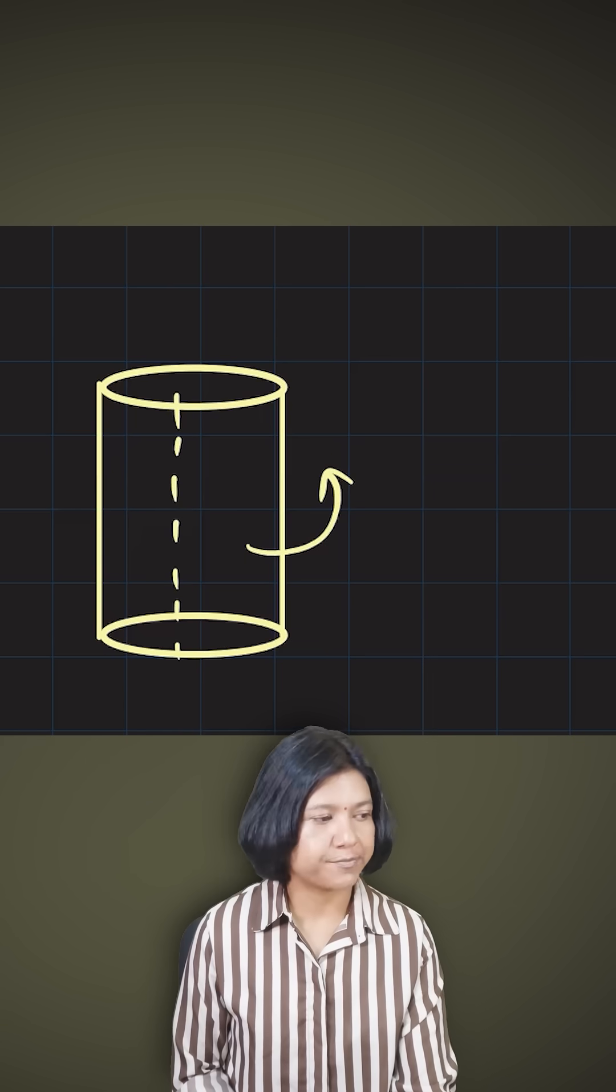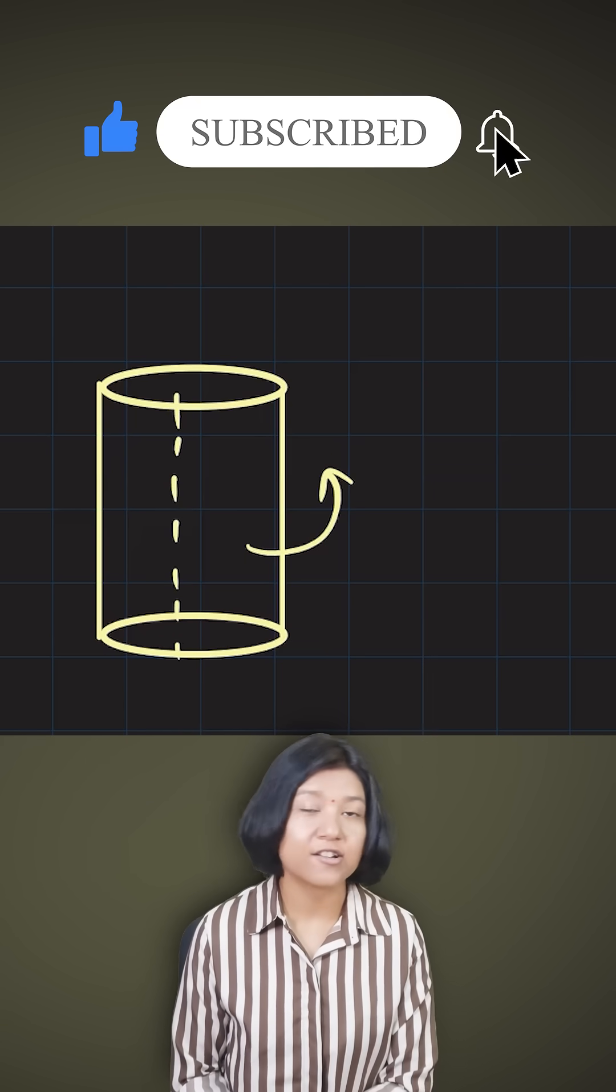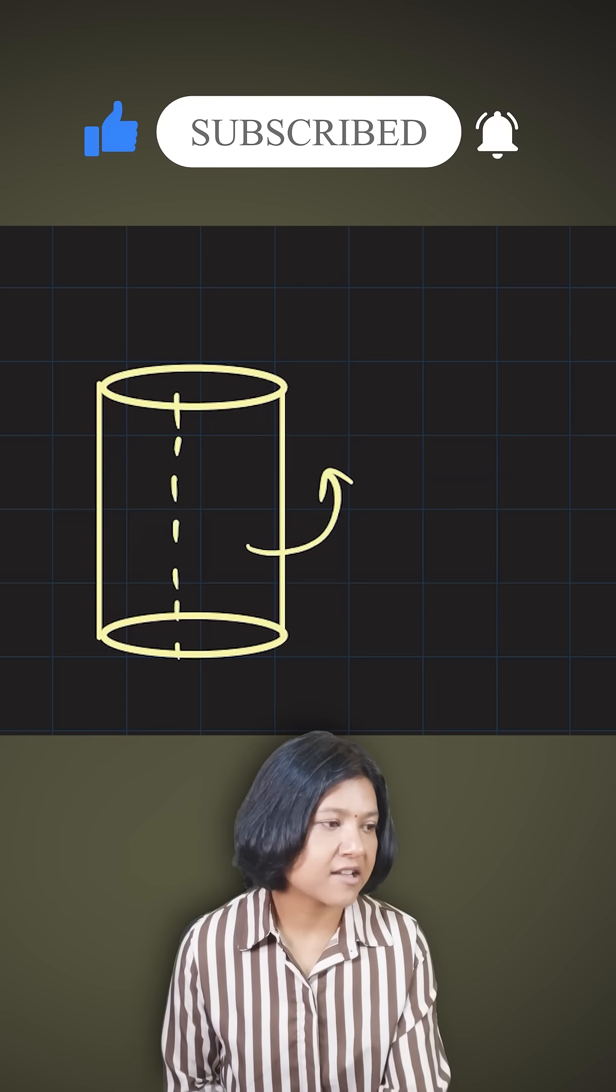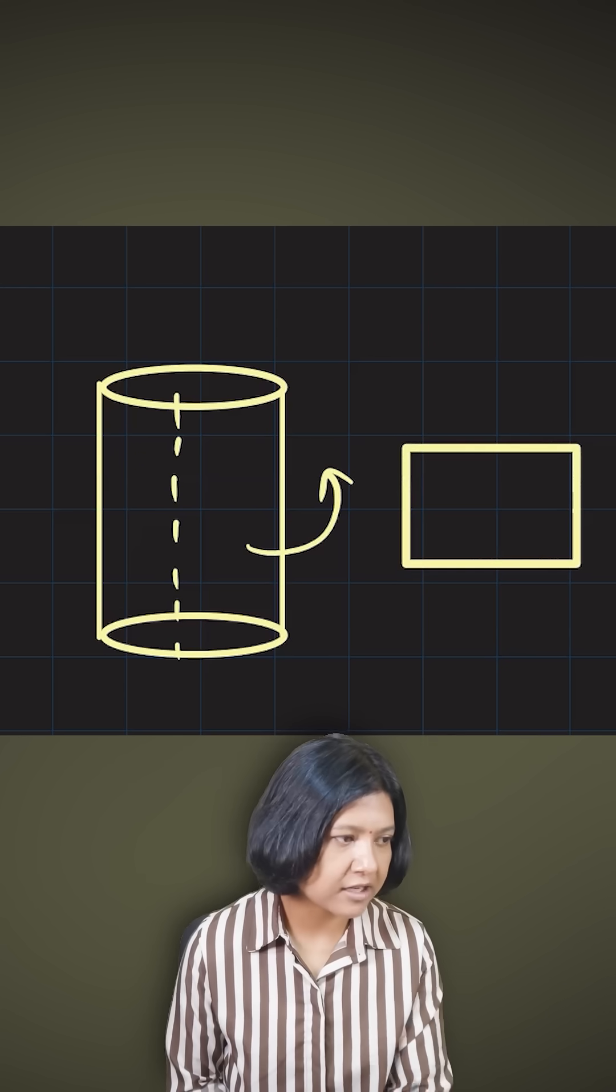If you were to open up a cylinder, if you were to cut it out vertically like this along the height, then what you would get is a flat rectangle.